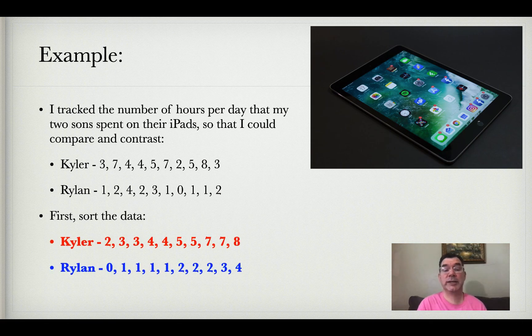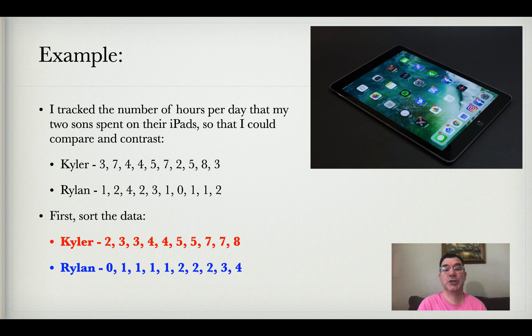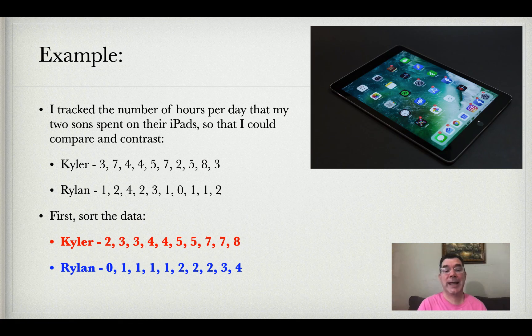First, we sort the data from least to greatest because we want to find the median, the upper quartile, the lower quartile, and the interquartile range, and the data needs to be sorted for that to happen.